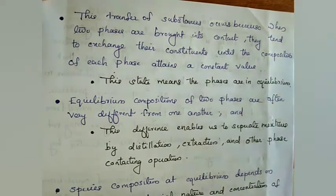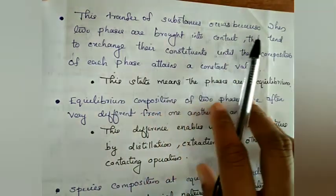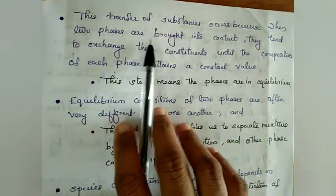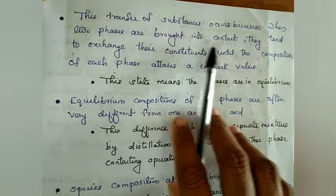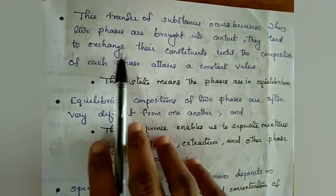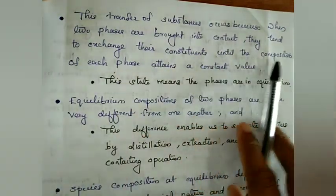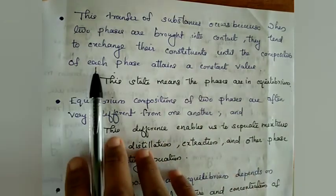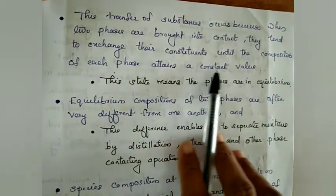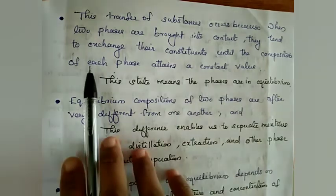Transfer of substance occurs because when two phases are brought into contact, they tend to exchange their constituents until the composition of each phase attains a constant value.